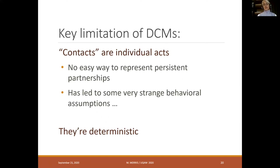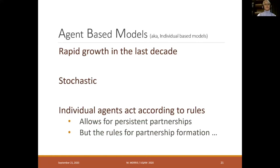Additionally, these models are deterministic — that's what the D stands for — so you miss a lot of the stochastic variation that can occur in epidemics. Those limitations led the modeling field to invest heavily over the last 20 years in agent-based models, sometimes called individual-based models.